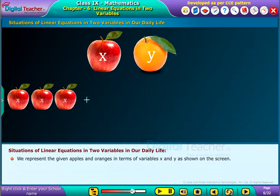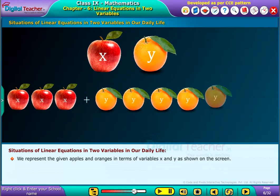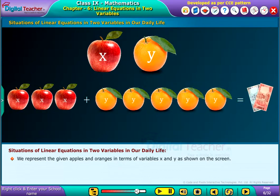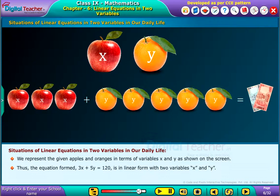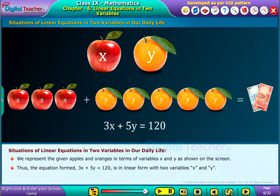We represent the given apples and oranges in terms of variables X and Y, as shown on the screen. Thus, the equation 3x + 5y = 120 is in linear form with two variables X and Y.